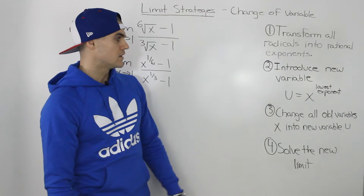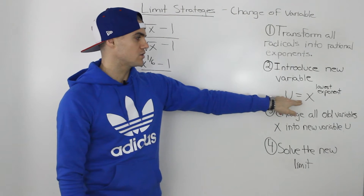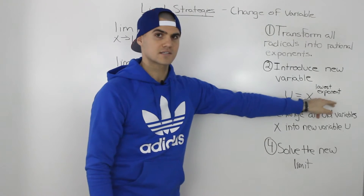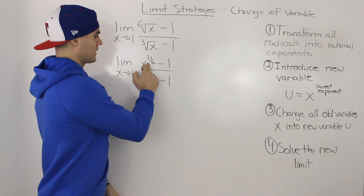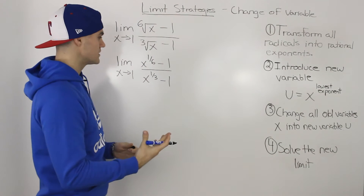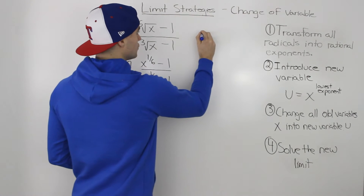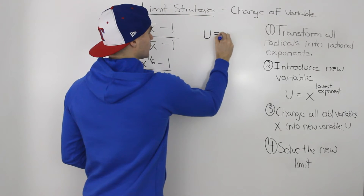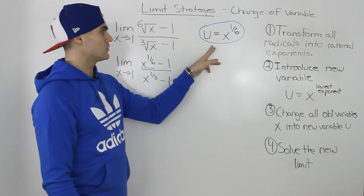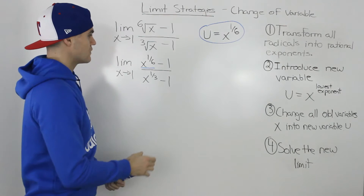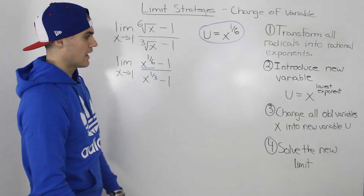Step two: introduce a new variable. We let u equal x to the power of the lowest exponent. The exponents in the question are one over three and one over six, and the lowest is one over six. So we let u equal x to the power of one over six. Now we have an expression for x to the power of one over six.